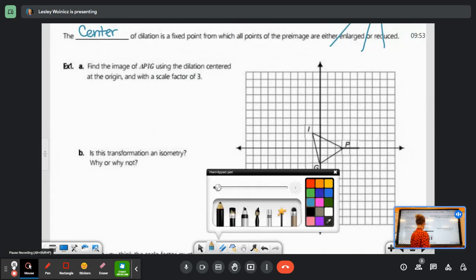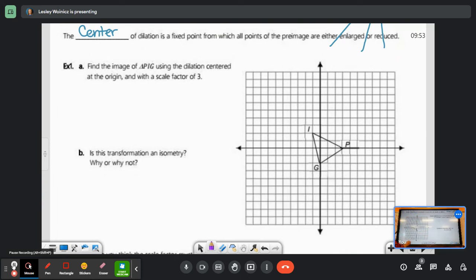So we have to find the image of triangle PIG using the dilation centered at the origin and having a scale factor of 3. We're going to center at the origin. Now, we want to dilate it by a factor of 3, so it's going to get bigger. So notice how, right now, point P is 1, 2, 3 units away from the origin.